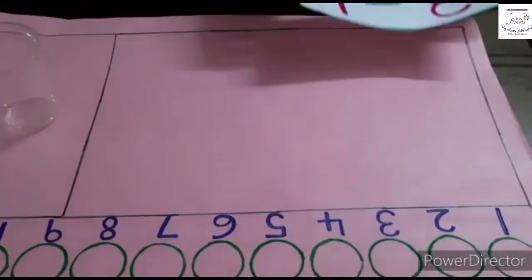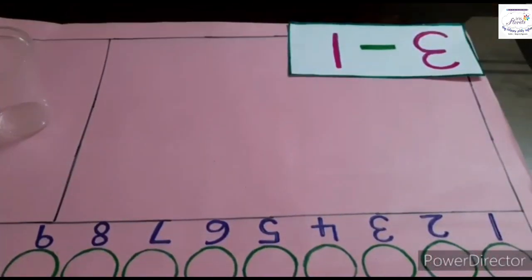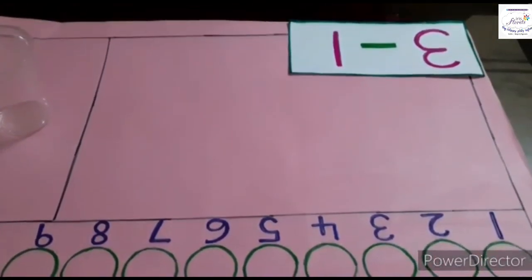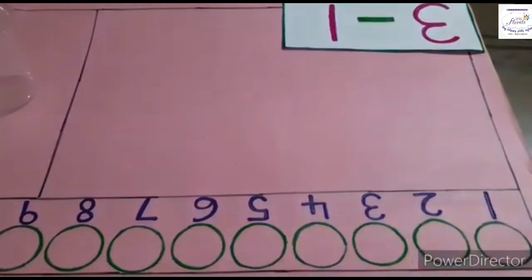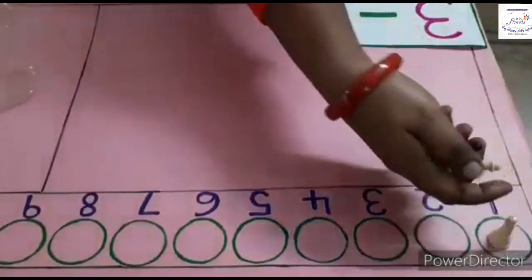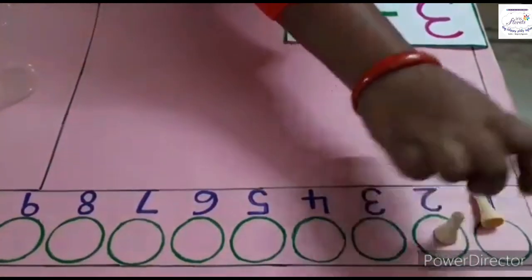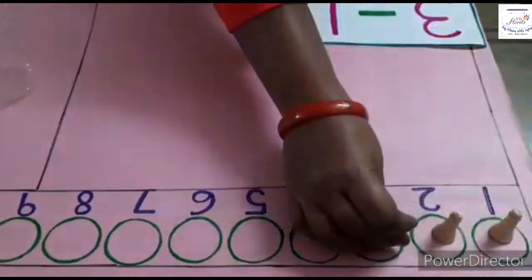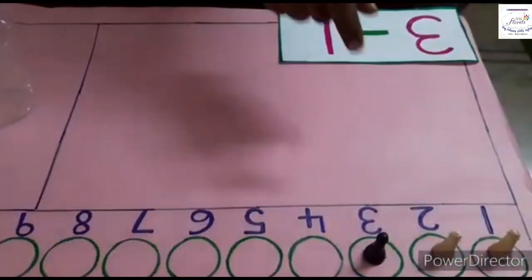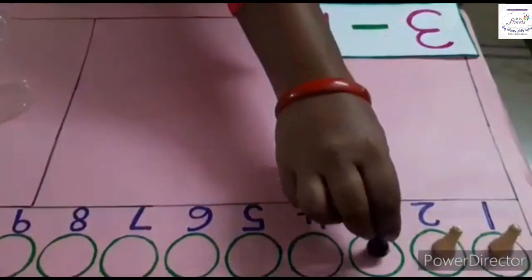Children, now I am taking numbers 3 and 1. I am taking 3 chess coins: 1, 2, and 3. 3 minus 1 means I am removing 1 chess coin from 3.